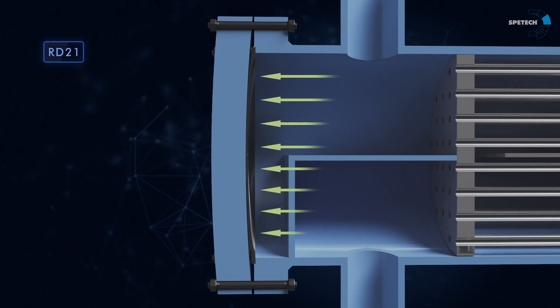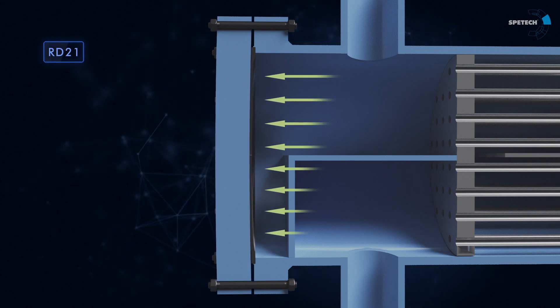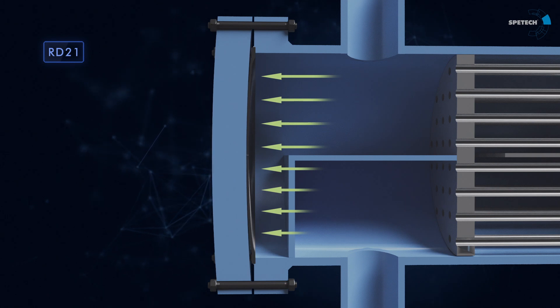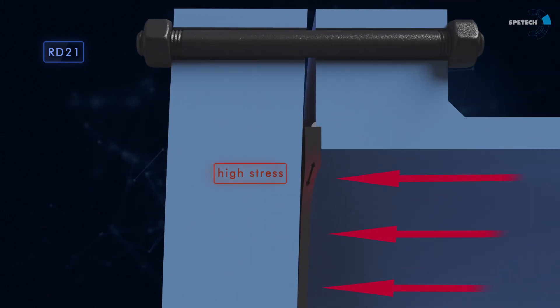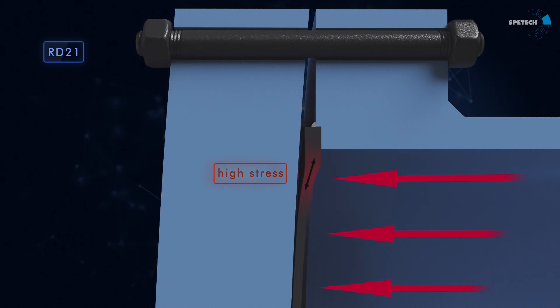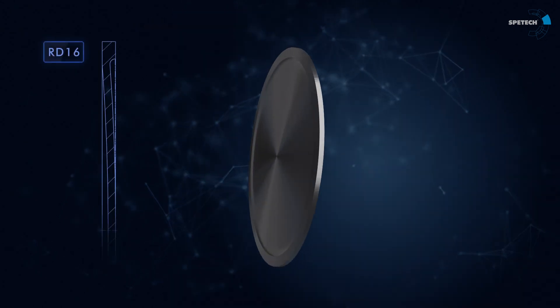The main function of metal diaphragms is securing zero leakage class in all the lifetime of equipment. At the same time, the diaphragms fulfill corrosion resistance function, preventing the vessel cover from chemical aggression.